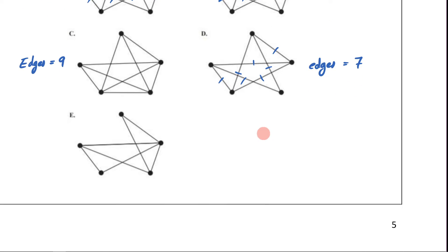Last one. Well, this one has how many? 1, 2, 3, 4, 5, 6, 7. That one has 7. Edges, 7.